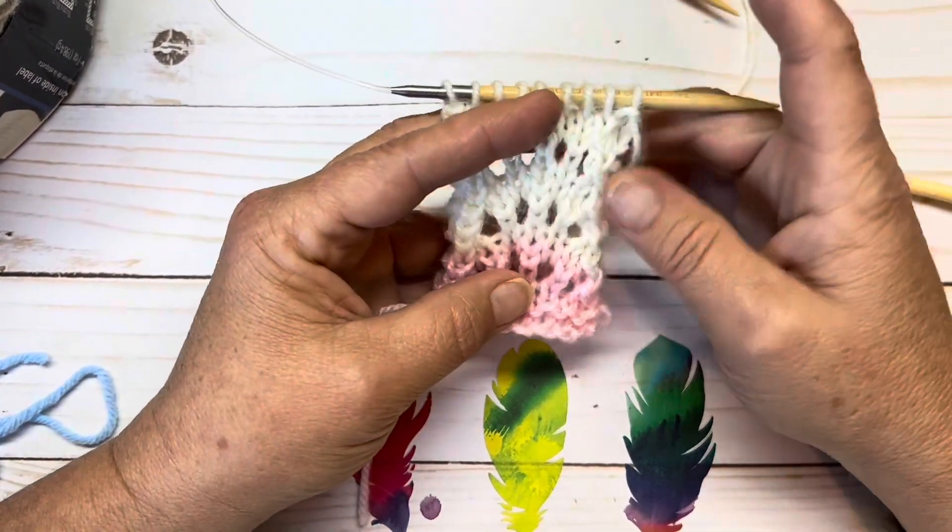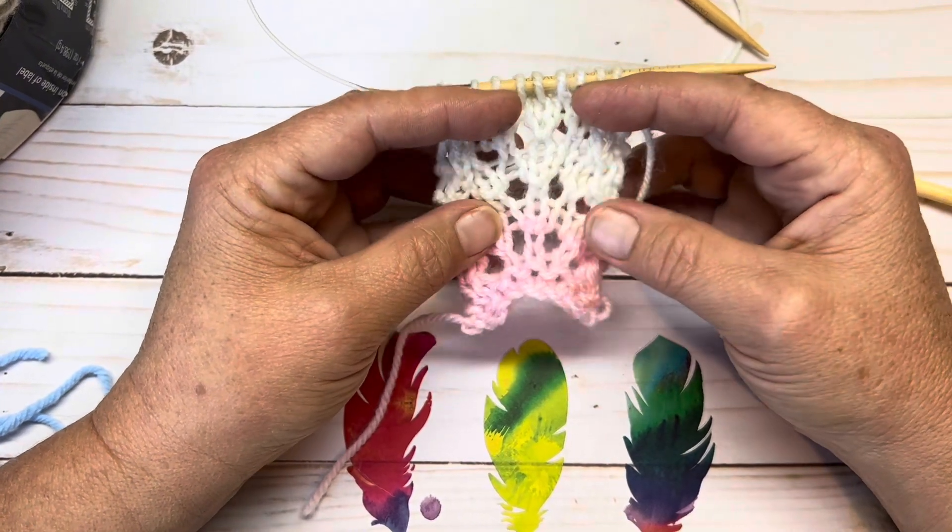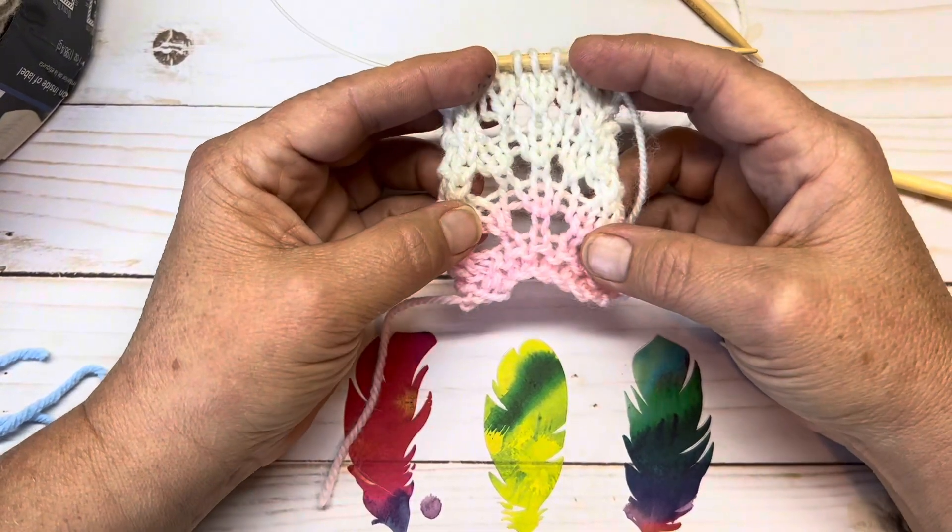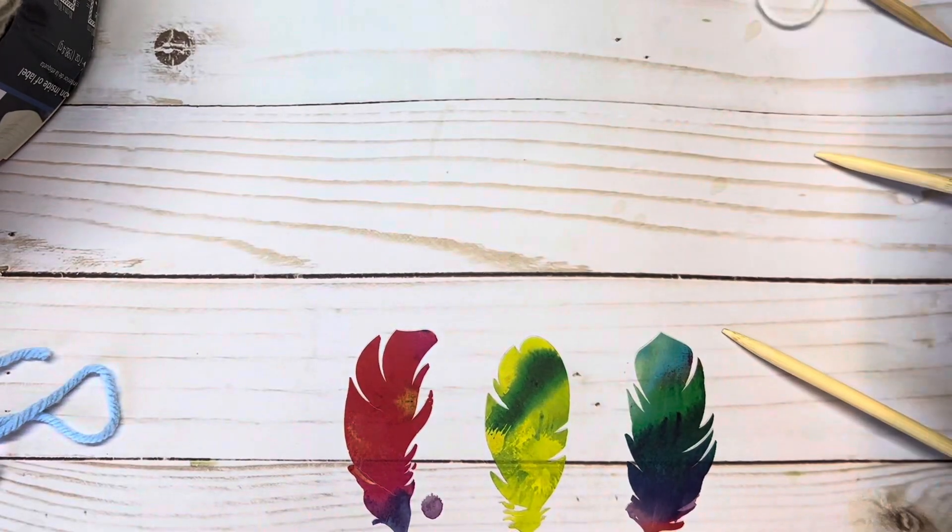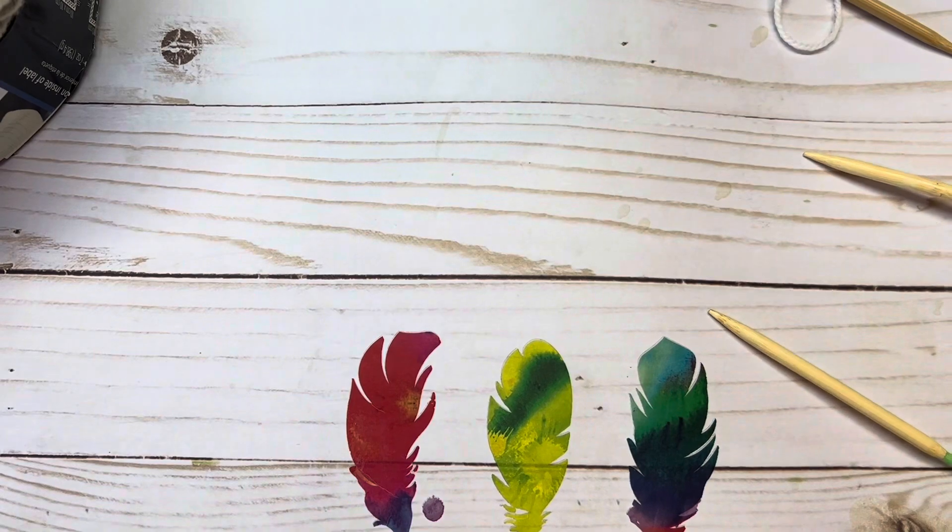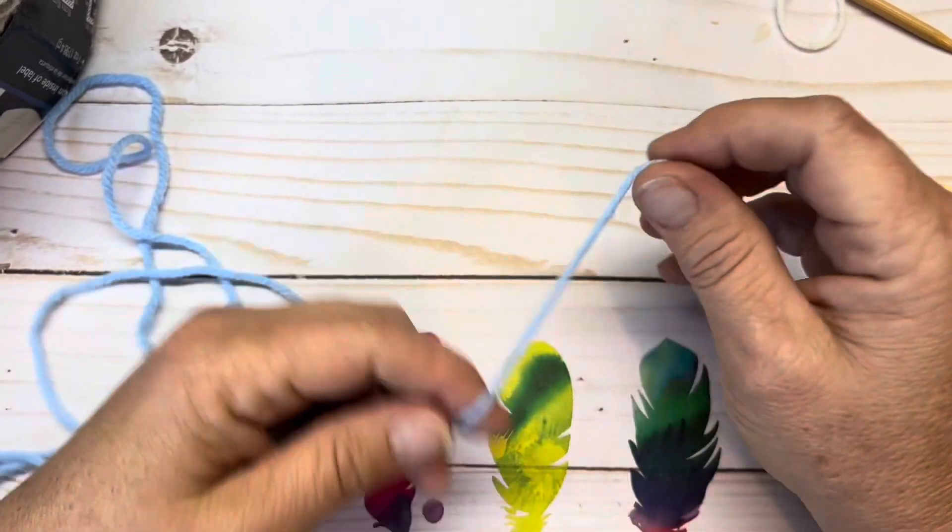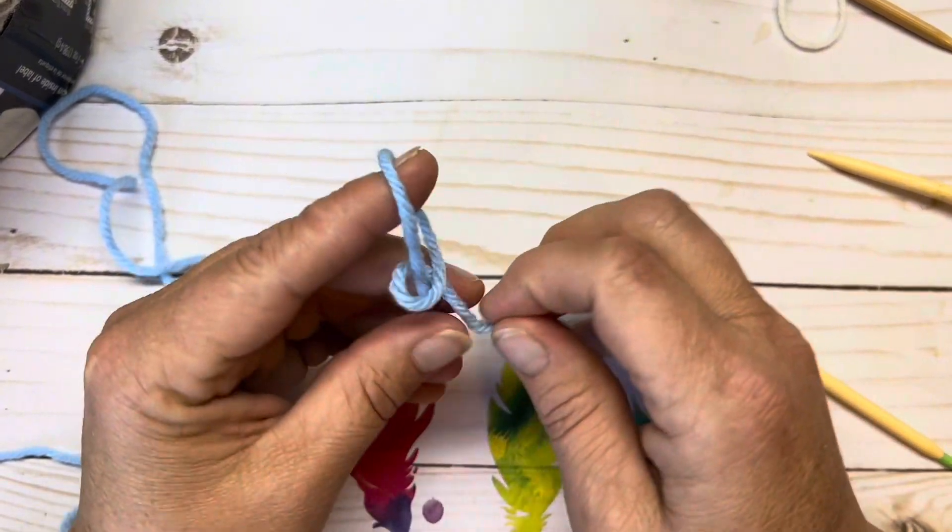For this particular panel it's done in nine stitch count. So I'm going to go ahead and work this up in a heavier weight yarn with you. I'm going to use a worsted weight and a 5.5 set of knitting needles.